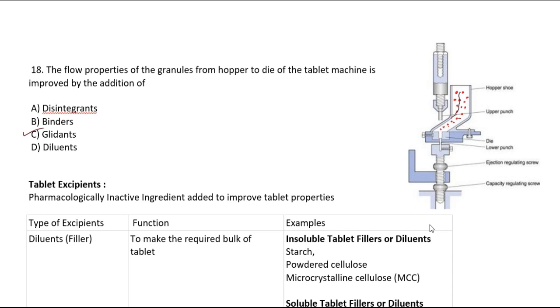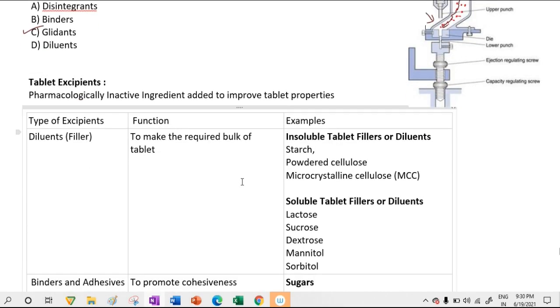Glidants improve the flow property of granules. When granules move from the hopper to the die, and between the lower and upper punch, the tablet is formed. Glidants are substances that improve this flow. Examples of glidants include talc, corn starch, and colloidal silica.